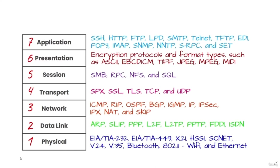The second layer of the OSI model is the data link layer. At this layer, directly connected nodes perform node-to-node data transfer where data is packaged into frames. The data link layer also corrects errors that may have occurred at the physical layer. It encompasses two sub-layers: the Media Access Control (MAC) layer, which provides flow control and multiplexing for device transmissions, and the Logical Link Control (LLC), which provides flow and error control over the physical medium and identifies line protocols.